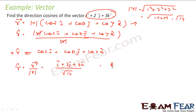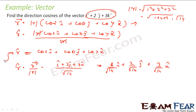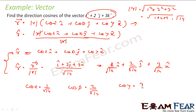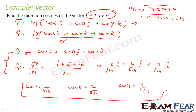So my unit vector is (i plus 2j plus 3k) divided by root 14. This becomes 1 by root 14 i cap plus 2 by root 14 j cap plus 3 by root 14 k cap. If you compare these two equations — the standard form cos alpha i plus cos beta j plus cos gamma k — you get cos alpha is 1 by root 14, cos beta is 2 by root 14, and cos gamma is 3 by root 14. And that is my answer.